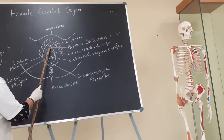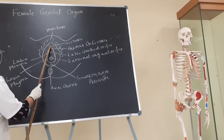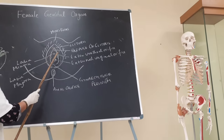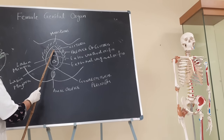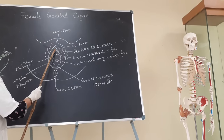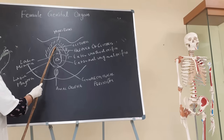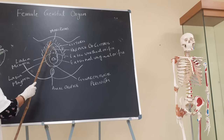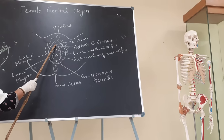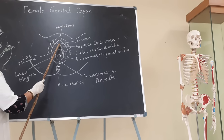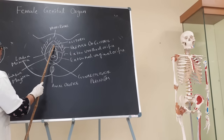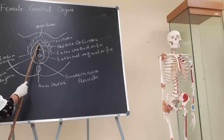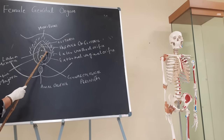The clitoris is present at the anterior end of the two folds of labia minora. It has got a glans, a body, and a root. The glans is the free end. The body has got erectile tissue called the corpora cavernosa. The corpora cavernosa on both sides are attached with the pubic arch.